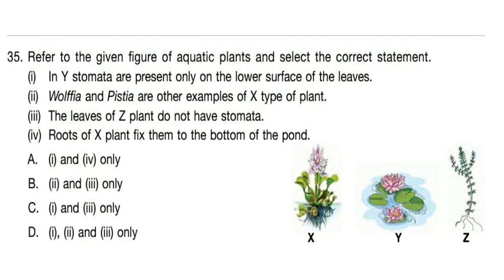Question 35: Refer to the given figure of aquatic plants and select the correct statement. In Y, stomata are present only on the lower surface of the leaves. Wolfia and pistachia are other examples of X type of plants. The leaves of Z plant do not have stomata. Roots of X plant fix them to the bottom of the pond. Correct answer is option B — statements 2 and 3 only.